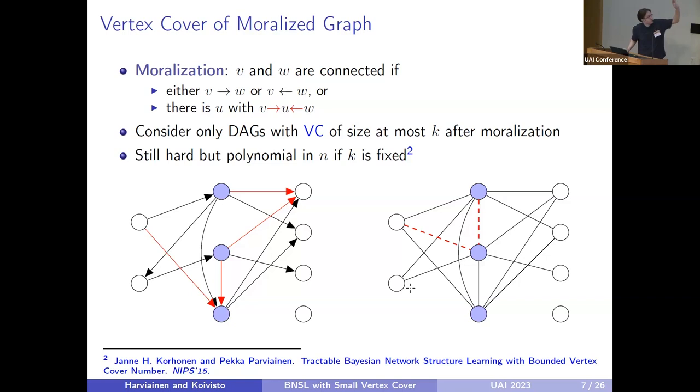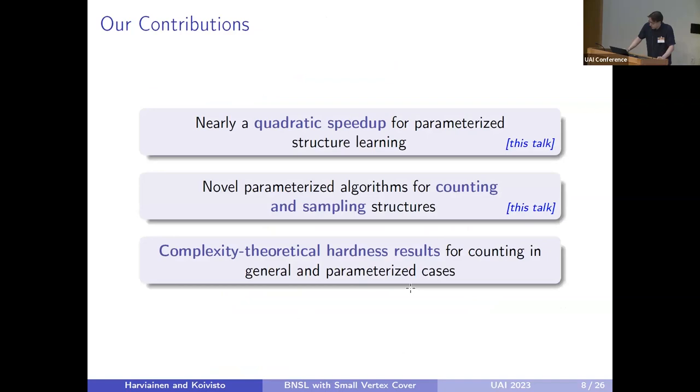These are denoted by those red edges in this figure. We only consider DAGs that have vertex cover of size at most K after this moralization operation. This problem is known to be hard in the optimization case, but it is still polynomial in the number of vertices if the value of K is fixed by the results of Koronen and Parviainen.